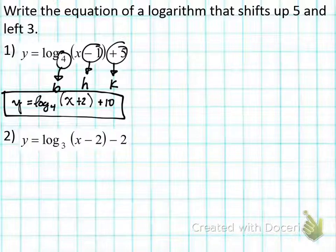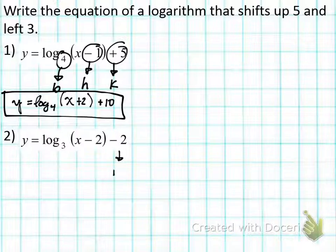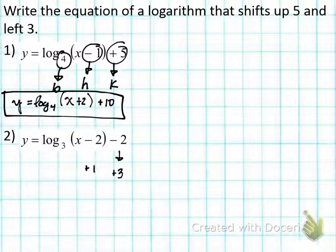Watch me do number two. Number two says the same thing — shift it up five and over three. Go to your K: negative two plus five is positive three. Then we have H at negative two, and we're going to shift it left three, so increase H by three: negative two plus three is positive one. Then we have log base three, and that's it.